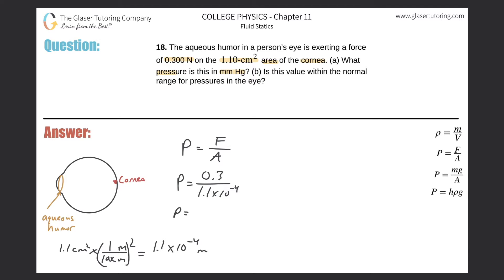This is 1.1 times 10 to the minus fourth. The pressure in Pascal is going to be 0.3 divided by 1.1 times 10 to the minus fourth, and this is going to be 2.73 times 10 to the third Pascal.